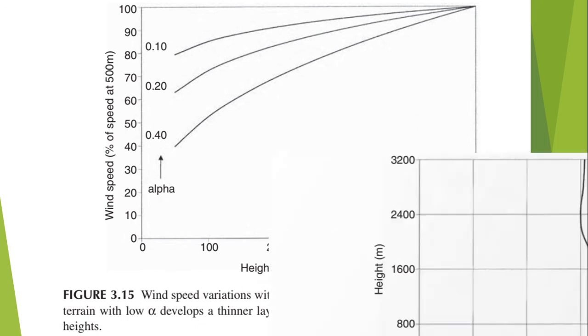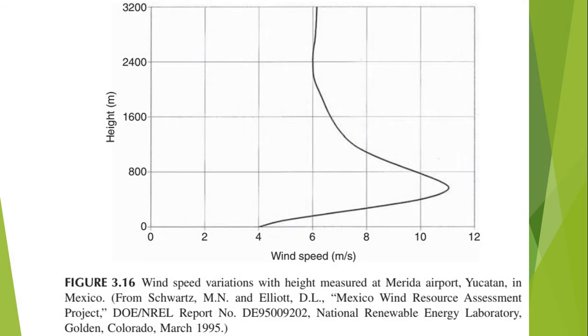This is another example of wind speed variation at a certain airport in Mexico, which indicates that at lower heights, say at 500 meters, the wind speed is relatively around 10 and gradually tends to become constant when the height is increased.